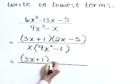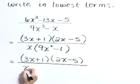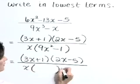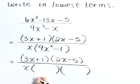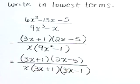Rewrite your numerator: 3x plus 1 times 2x minus 5. Don't lose your x out in front in the denominator. Now that difference of squares, 9x squared minus 1, is going to factor as 3x plus 1 times 3x minus 1.